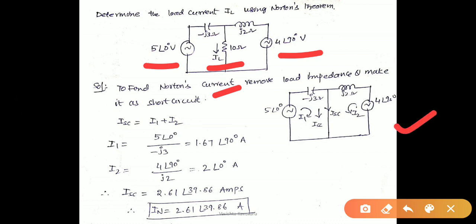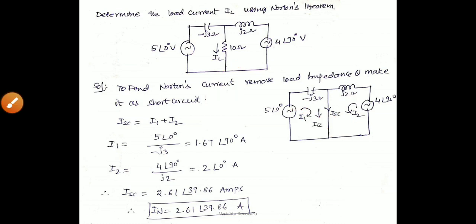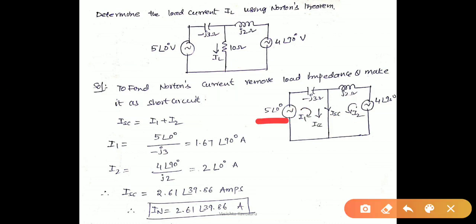We have to redraw the circuit as shown in the figure. Since we have to find the short circuit current, upon removing and short circuiting this 10 ohm branch, there are two loops in the given network. Therefore the two currents I1 and I2 are flowing in the two loops. The short circuit current is the summation of the two currents, because they are in the same direction. Therefore IAC equals I1 plus I2, where I1 is the current in the first loop: 5 at angle 0 divided by J3, giving 1.67 at an angle 90 degrees.